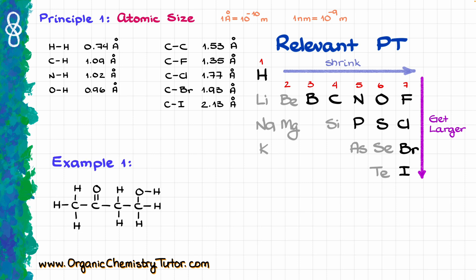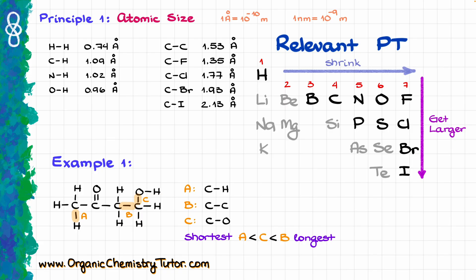Let's see how it looks in practice. Here I have a molecule where we need to rank the highlighted bonds: carbon-hydrogen, carbon-carbon, and carbon-oxygen. Since bonds with hydrogen are tiny in comparison, the CH bond is going to be the shortest. Then we have oxygen, which is a little bit smaller than carbon, so the CO bond comes next. Finally, the carbon-carbon bond is the longest bond in this example. The numbers confirm those differences in bond length.